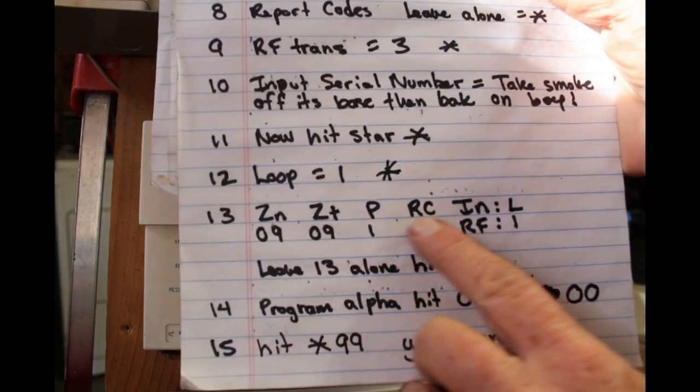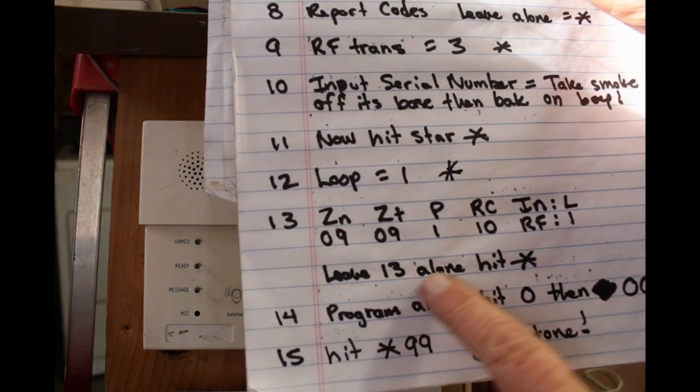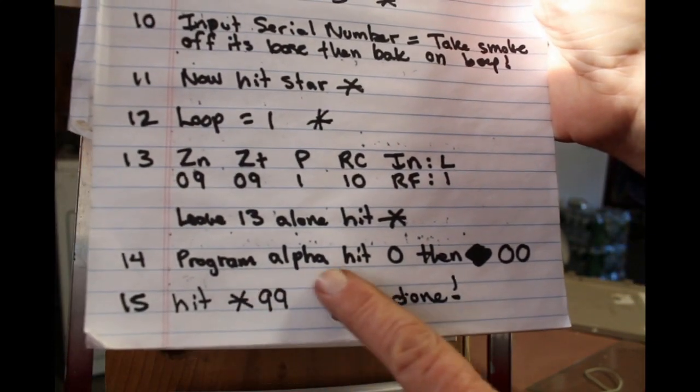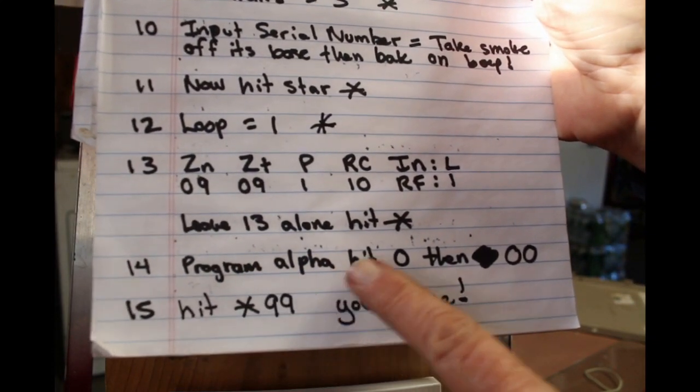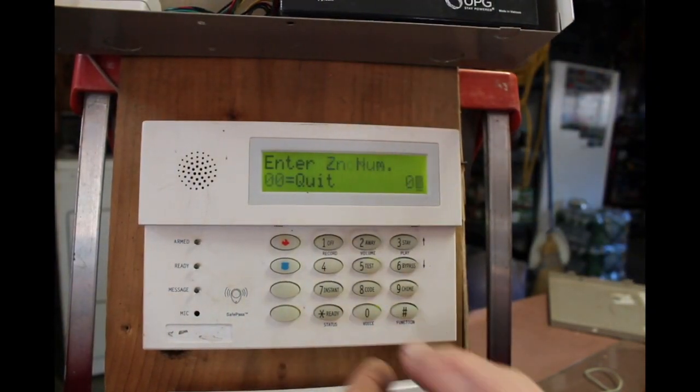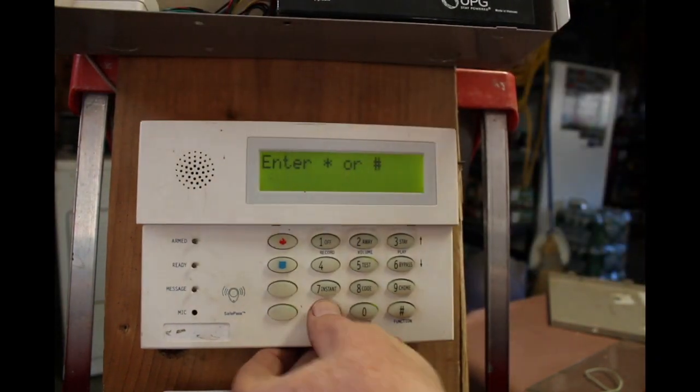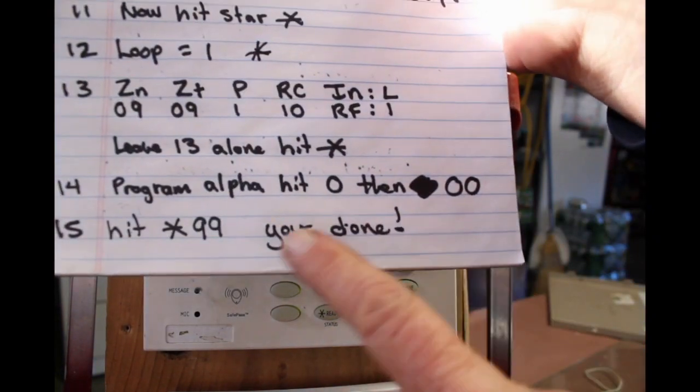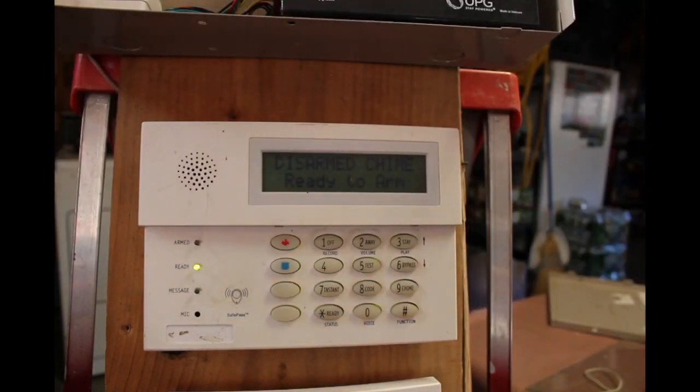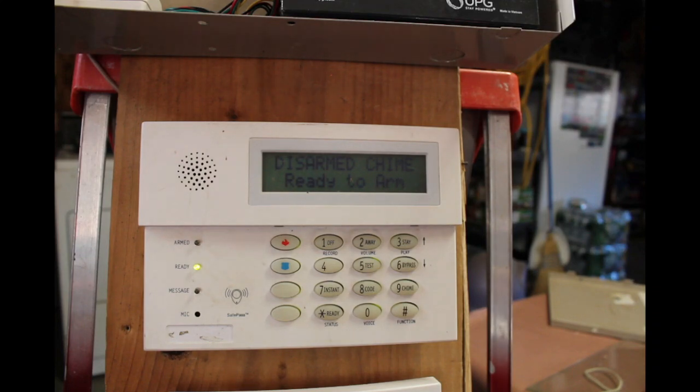All right, you'll see this next, and it just says leave 13 alone and hit star. All right, 14: let's see, program alpha, hit zero, then 00, hit star 99. You're done. Okay, that is now, the 5808 is now programmed into the alarm system.